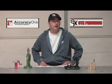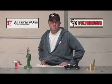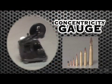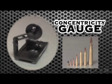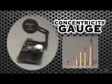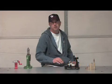CTK Precision and Accuracy One Shooting Supplies have combined efforts again to bring you another new product, the Accuracy One Shooting Supplies Concentricity Gauge. The Accuracy One Shooting Supplies Concentricity Gauge is for anyone who is a precision shooter or reloader who wants to get the utmost accuracy from their ammunition. We'd like to do a video demonstration of this product for you today.